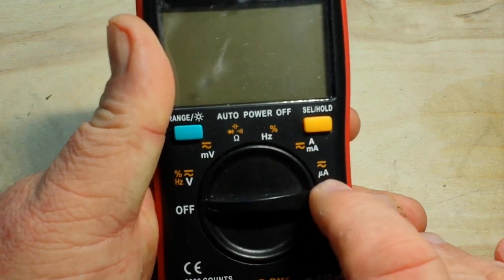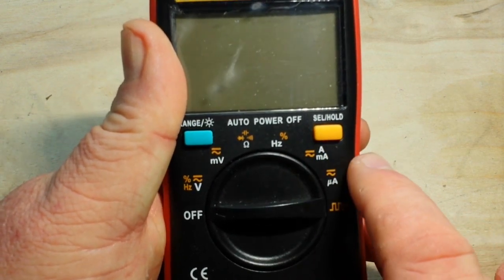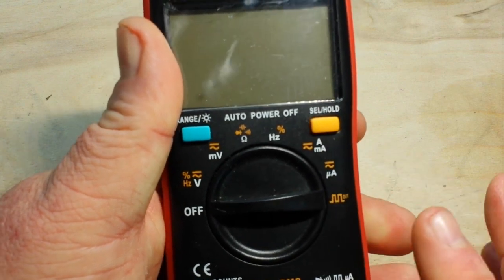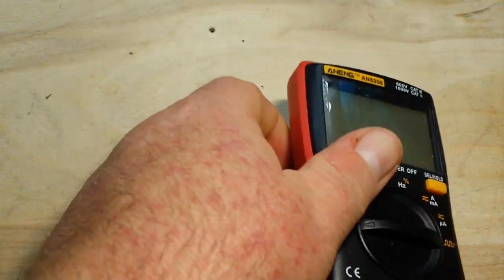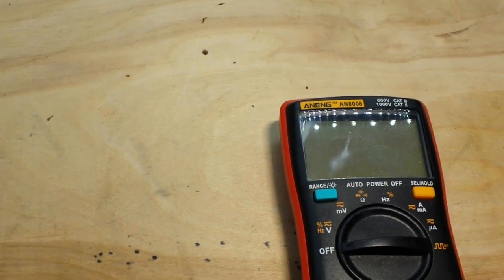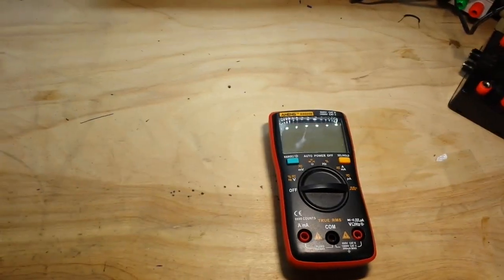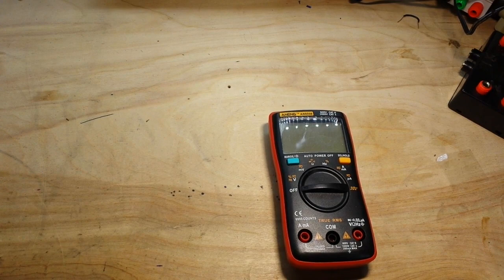We have hertz and duty cycle. We have AC and DC milliamps, microamps, and it has a square wave output. Don't use it on high voltage. Like Aussie Dave says, it'll blow up your wombat or something like that.